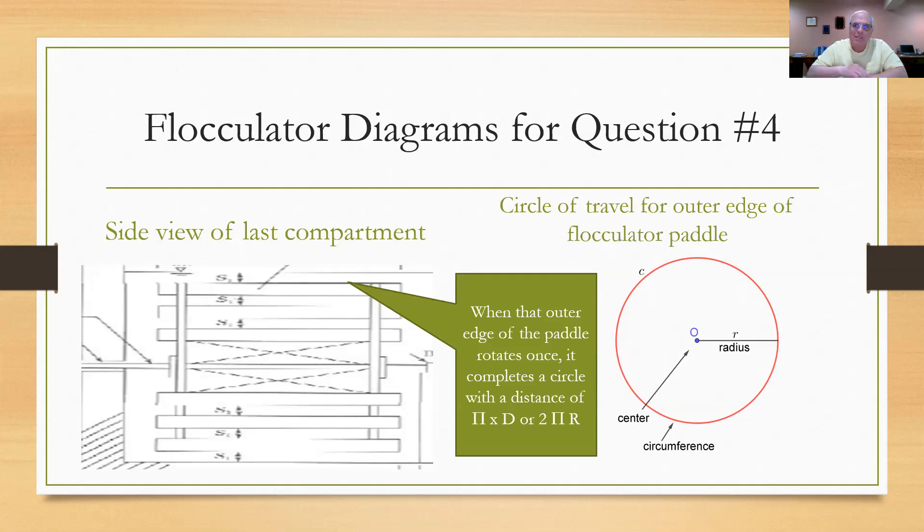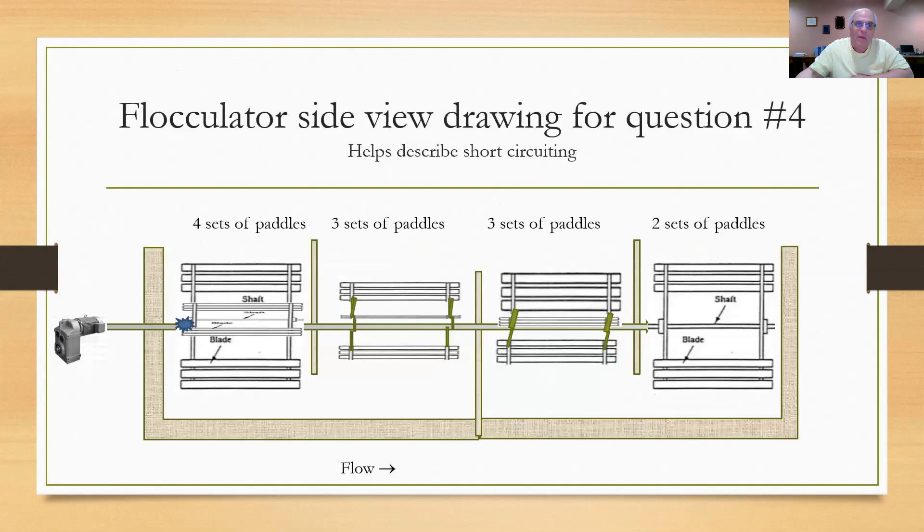We've got to measure that distance to see how far it must travel. Here's the way it looks like from the side. There's your motor driving the shaft. Those shafts drive four paddles in the first compartment, three sets in the second, three sets in the third, and finally two in the last. Look at that blue dot there, that thing I have coming on the shaft in the beginning.